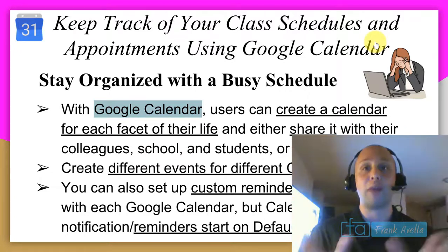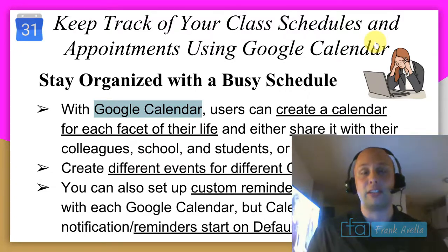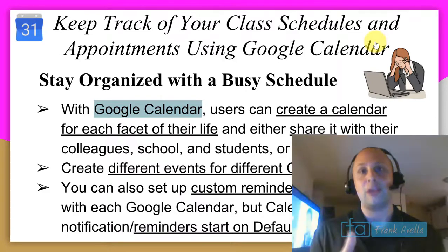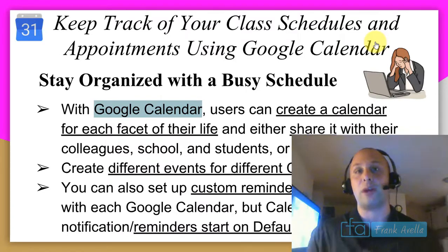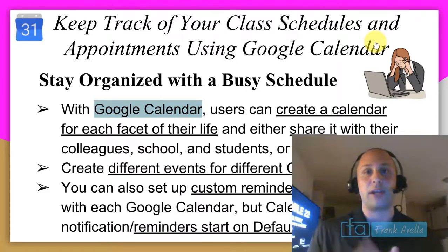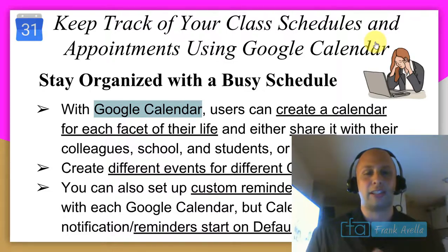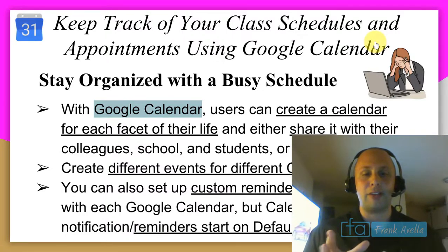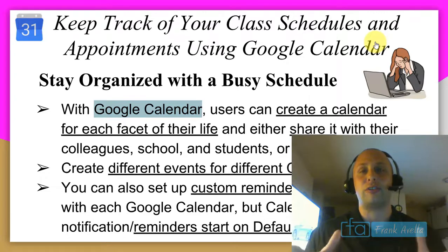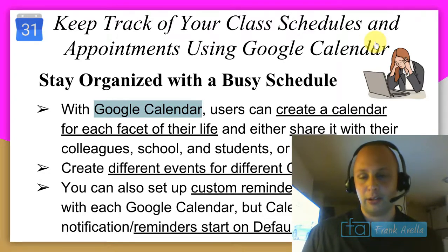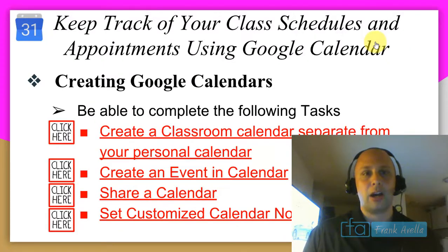You can also set up custom reminders and notifications — those words are used interchangeably. A notification will let you know an event is coming up, like basketball practice in 15 or 30 minutes. You can set the time yourself. Calendar event notifications start on default, and I'm going to show you how to change that.